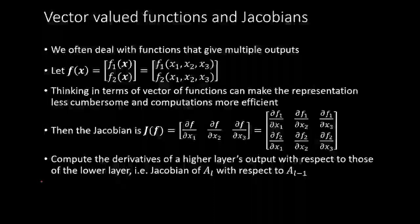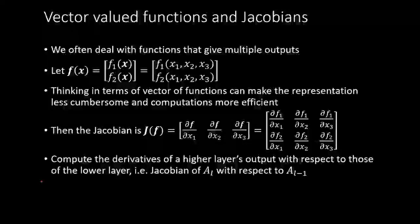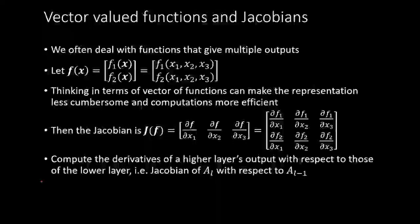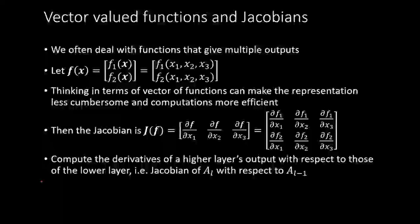Jeffrey Hinton and others independently came up with the backpropagation algorithm: we can train neural networks using the chain rule of derivatives, storing partial derivatives during the forward pass so the backward pass simply amounts to multiplying the derivatives coming back. We saw how that worked when everything was a scalar — when the input was a scalar, every weight was a scalar, so we had only one neuron in every layer.